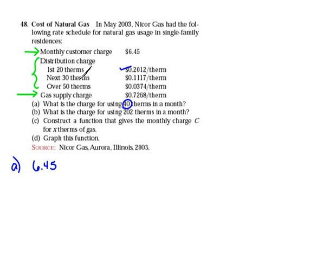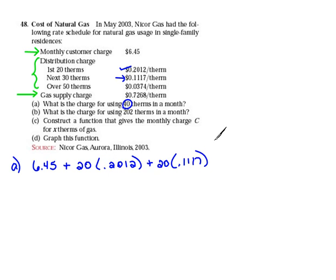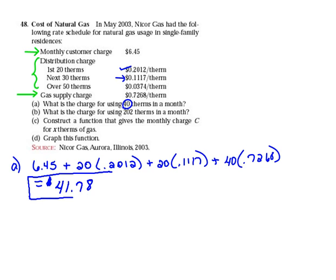Then the next 30 — which we're not going to use that much — we get charged at a different rate. Keep in mind, the first 20 we get charged at $0.2012. If I've paid for 20, that means I've got 20 left that I've not paid for, so that gets paid at the $0.1117 rate — 20 more therms at $0.1117. Now we've paid for all 40 therms of gas. Finally, we have to pay the gas supply charge no matter how much we've used. We use 40 therms, so we pay for that at $0.7268 per therm. We can put this in our calculator and multiply and add it all together, and we should get $41.78.